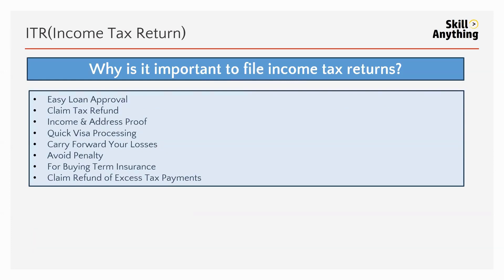Why is it important to file income tax return? Filing income tax return helps with loan approval. Whenever you go for a loan — for a house or vehicle — it helps to get your loan approved at the bank, as they demand income tax documents. So it is necessary to file income tax return whether you come under the exemption limit or not.